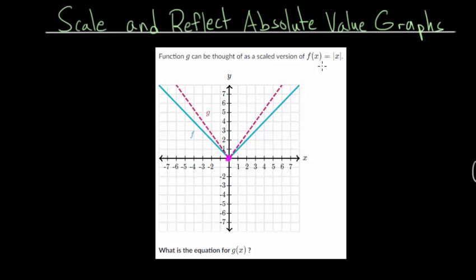What did we multiply by on the outside? And notice that it's skinnier than the parent function. So this is going to be the first case where the number we're multiplying by is bigger than one. But we have to figure out exactly how much bigger.